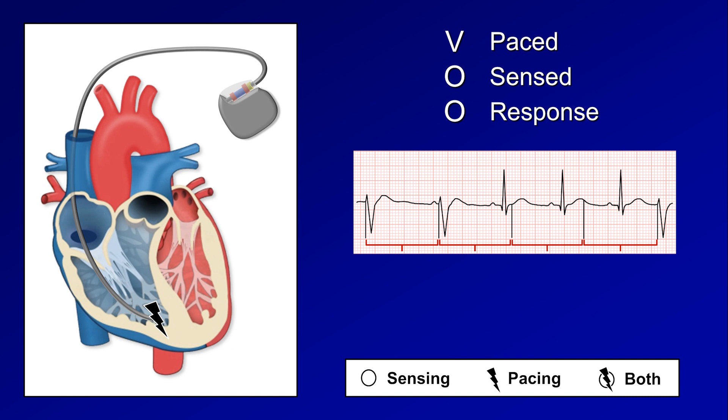Whether or not a pacing spike triggers the QRS complex and thus ventricular contraction only depends upon whether or not the ventricle is in its refractory period at that precise moment. This is called asynchronous pacing, meaning the heart's intrinsic conduction system and the artificial pacemaker are firing irrespective of whatever the other one is doing.